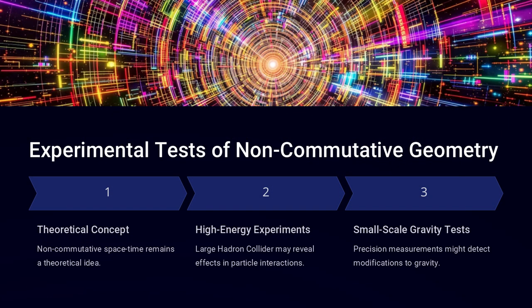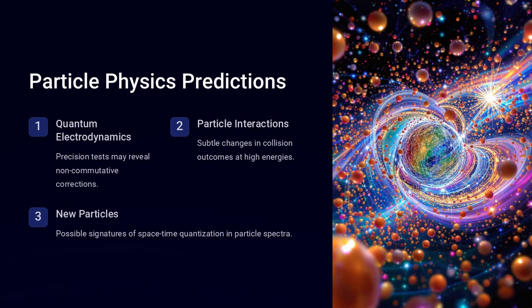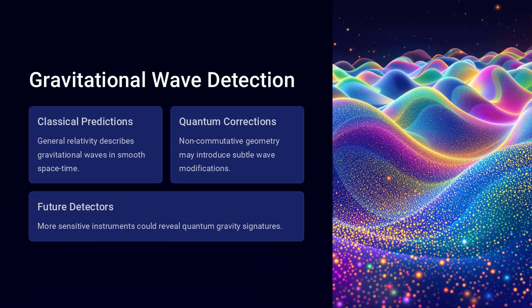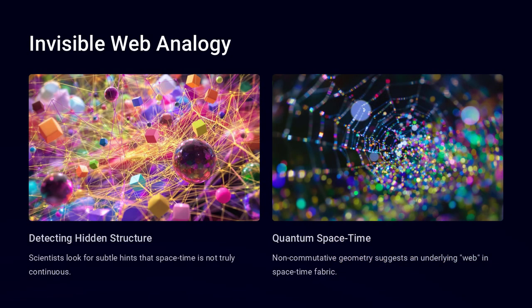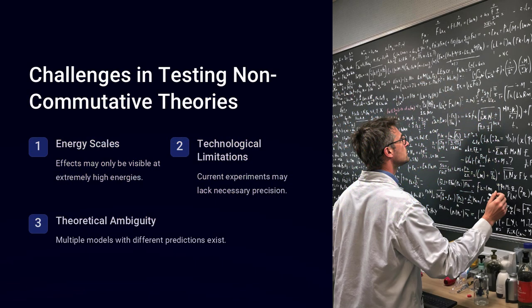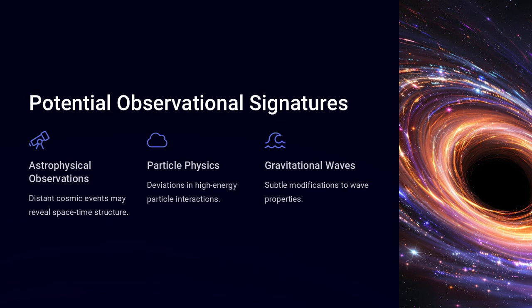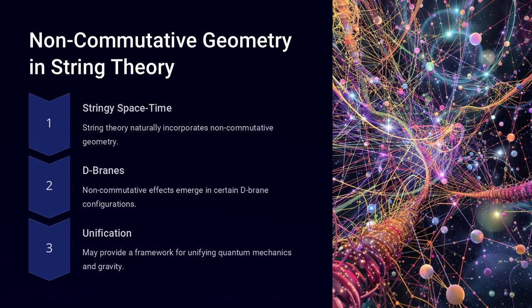Even more intriguingly, experiments in solid-state physics and condensed matter systems have revealed behaviors that resemble non-commutative geometry. Certain exotic materials, such as topological insulators, exhibit quantum behaviors where spatial coordinates lose classical meaning, hinting that these effects are not just theoretical but may be observable in lab conditions.